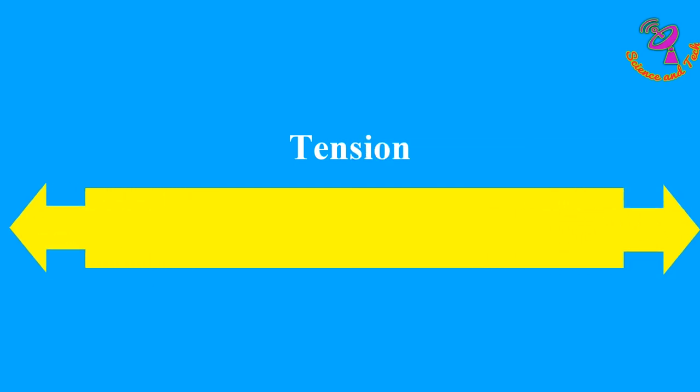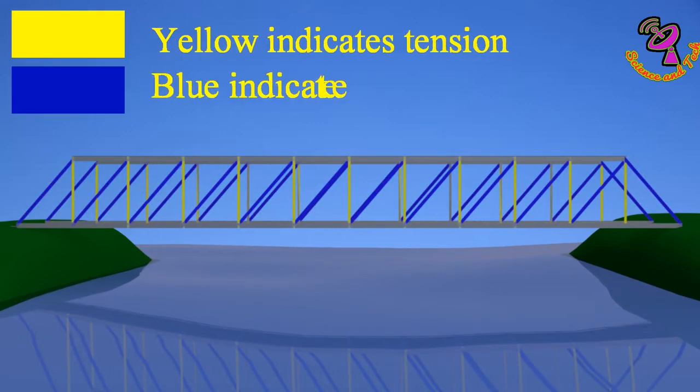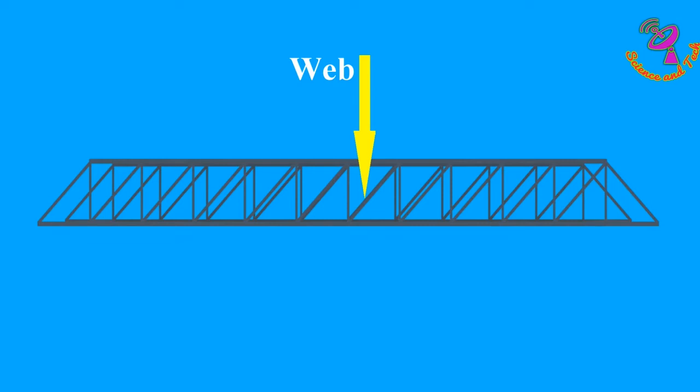Generally, trusses absorb tension and compression forces, and these avoid bending moment. Here, a single element is called a web, and a number of webs join in a place called a node.